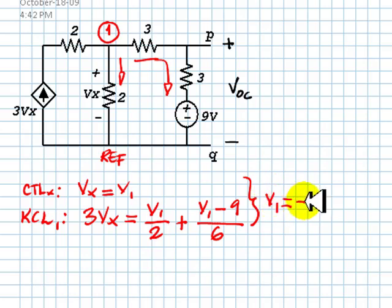V1 is negative 0.6429 volts, but the voltage we need is VOC. How are we going to find that?